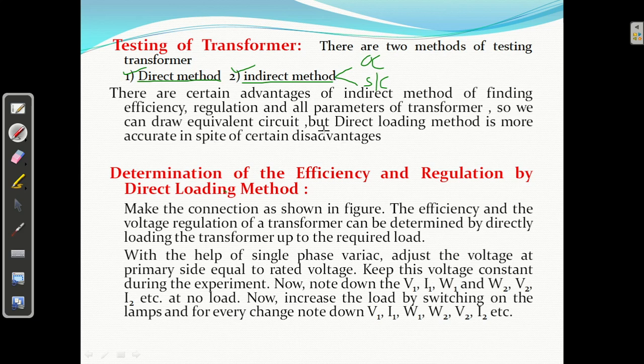The disadvantages are: first, load requirement. Just only for testing we have to load, so it is simply wastage of energy. Second, for high rating transformer like 100 kVA, arranging that much load is very difficult. Third problem is that if you are loading, heat will be produced and it is really very difficult to dissipate that much heat. These are the three disadvantages of direct loading method. But it has one advantage: it is giving more accurate results.